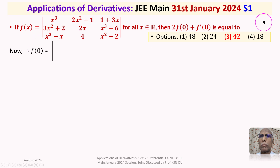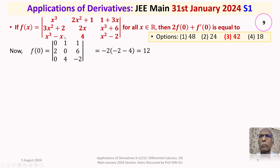We have f(x) as a 3×3 determinant whose entries are the given polynomials. To find f(0), substitute x = 0 in the determinant. You get entries: 0, 1, 1, 2, 0, 6, 0, 4, −2. Expanding by the second column gives −2 times (−2 − 4), which equals −2 times −6, that is 12. So f(0) = 12.